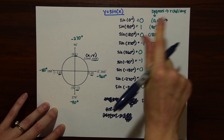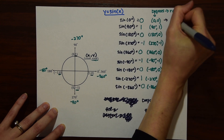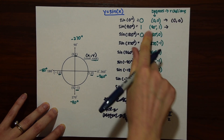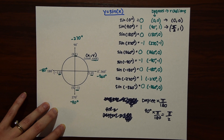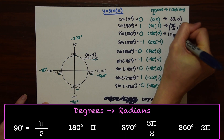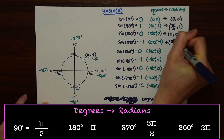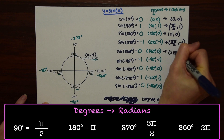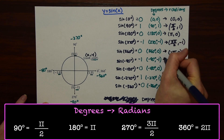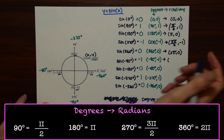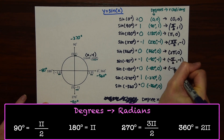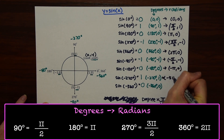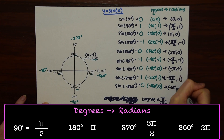So let's convert all our coordinates to radians. 0 remains the same — it's the only one. 90 degrees becomes pi over 2, so we have (pi/2, 1). 180 becomes (pi, 0). 270 becomes (3pi/2, -1). 360 becomes (2pi, 0). And now the negative versions: (-pi/2, -1), (-pi, 0), (-3pi/2, 1), and (-2pi, 0).